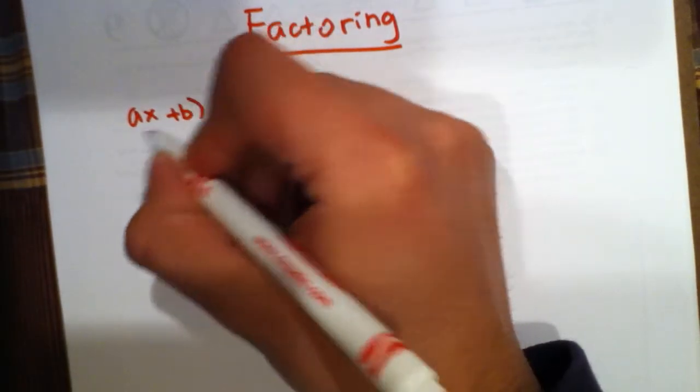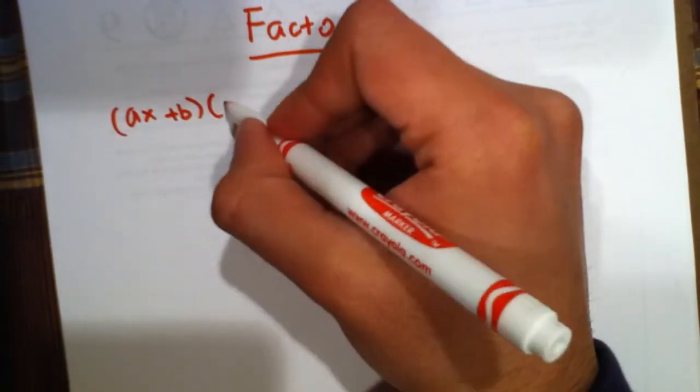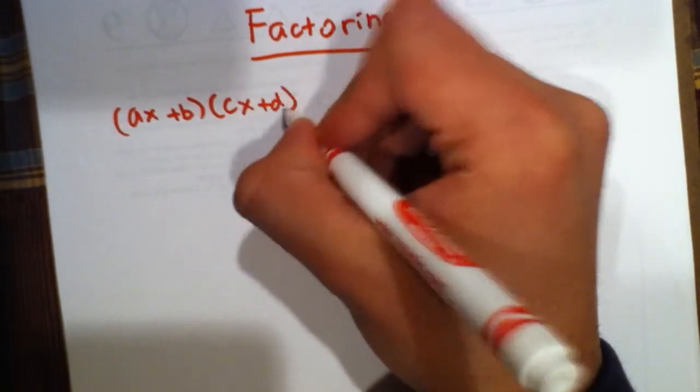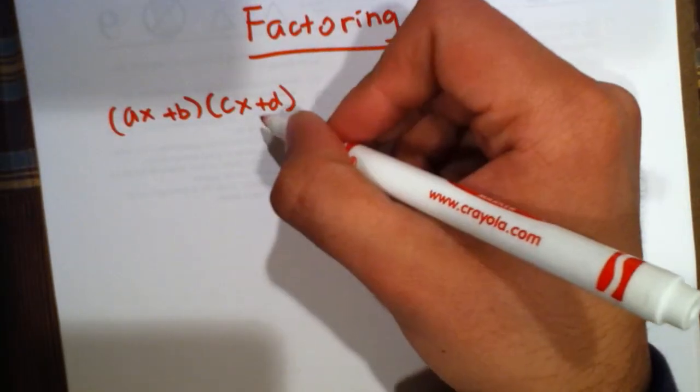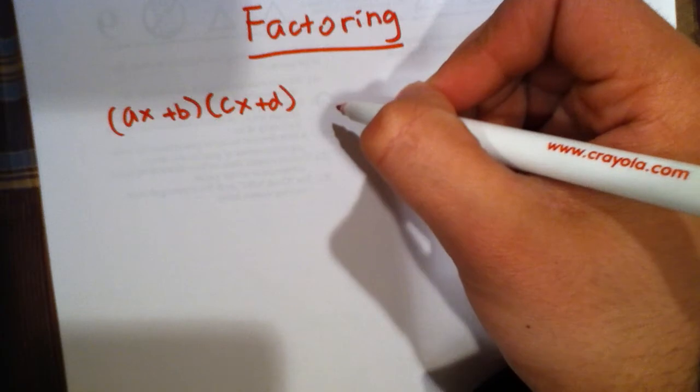ax plus b times cx plus d. In this case, x is the variable, a, b, c, and d are all constants.